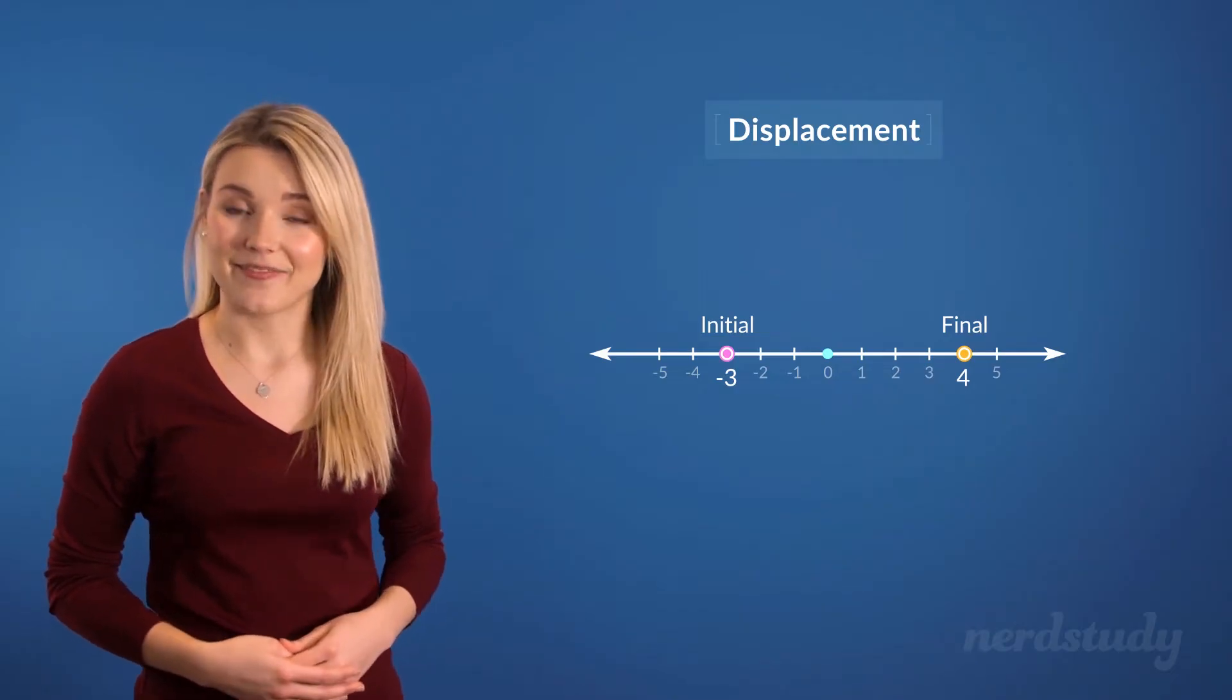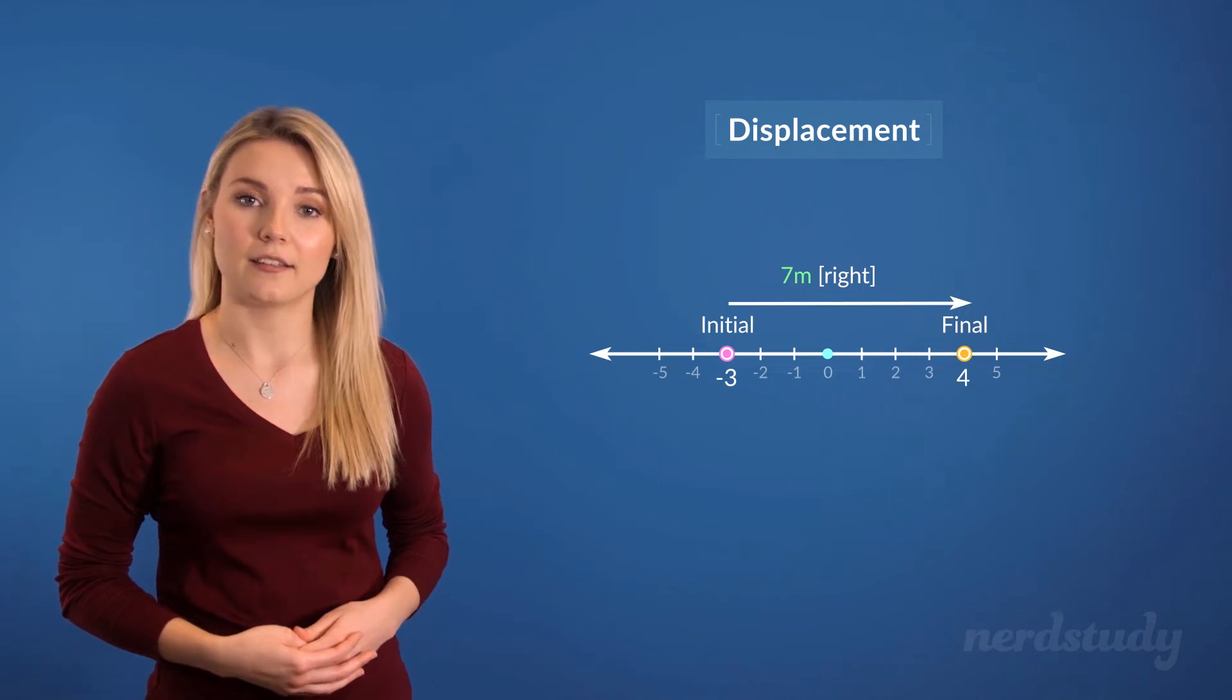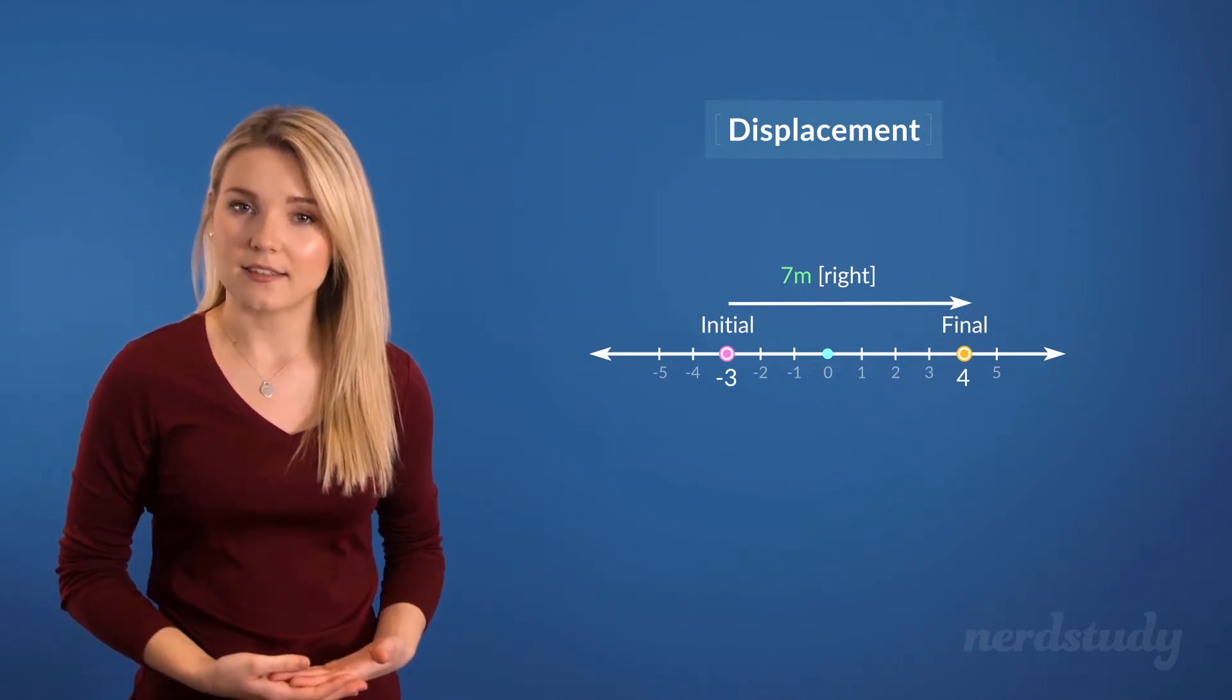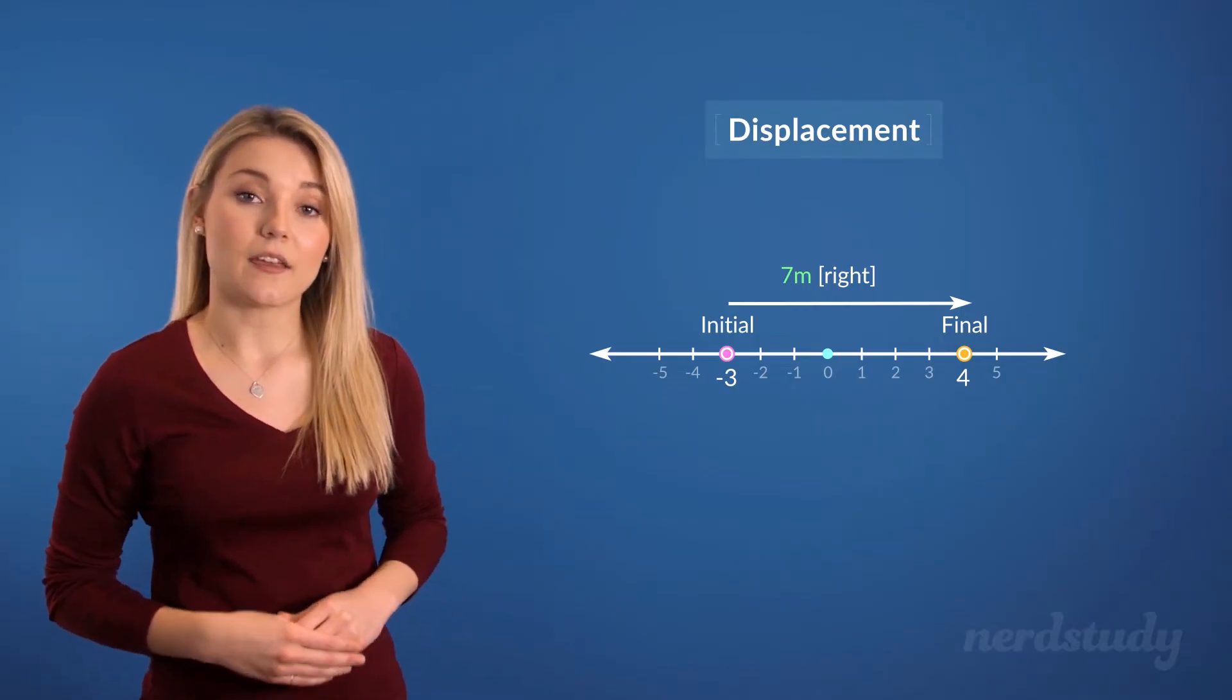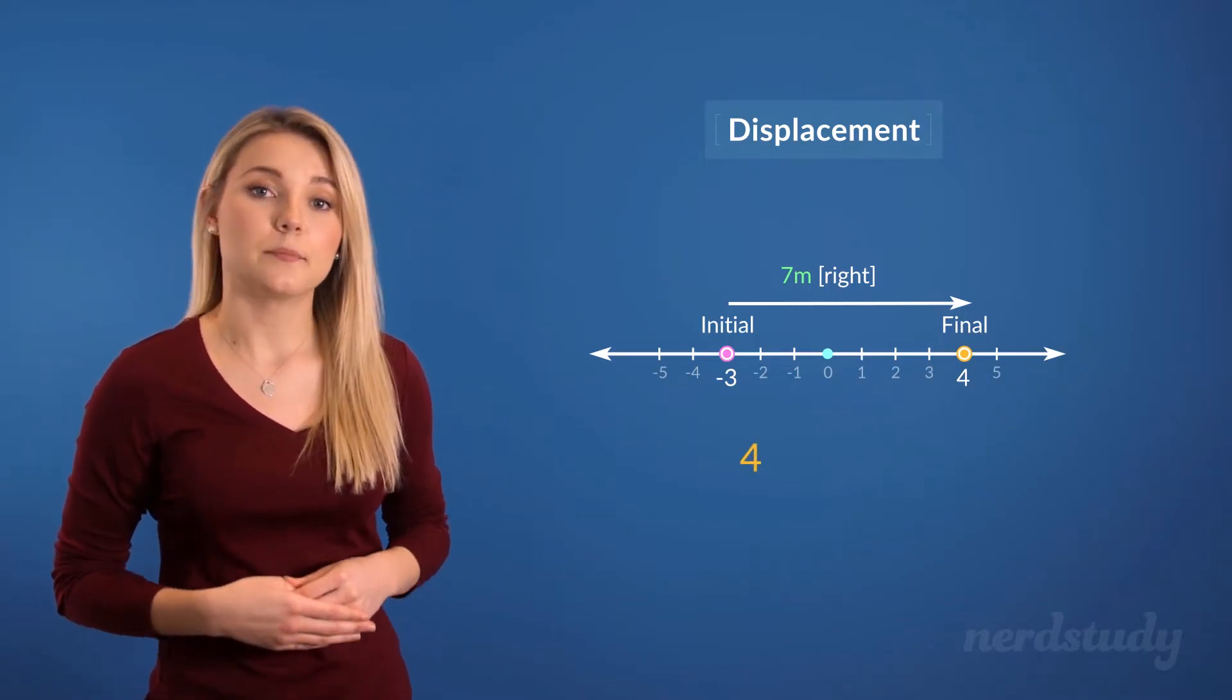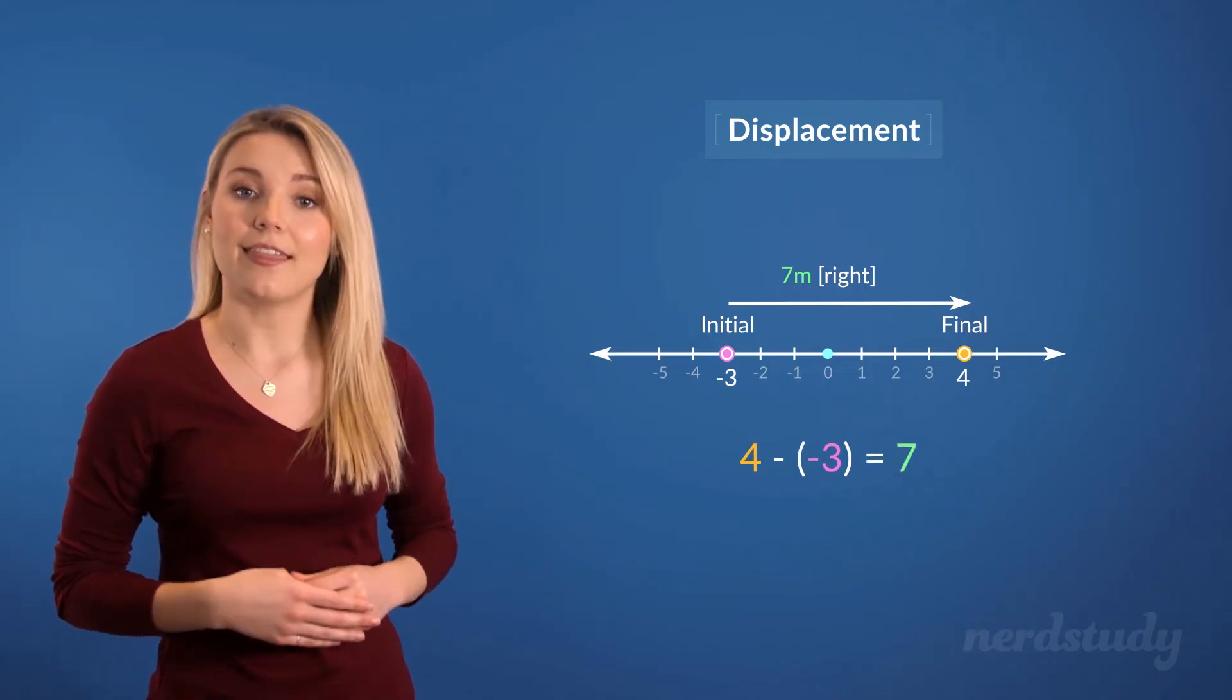That's easy. It's 7 meters to the right of the position it started at. It's easy to see this, but we can calculate it too. Simply take the final position and subtract it by the initial position to give us 7 in this example.